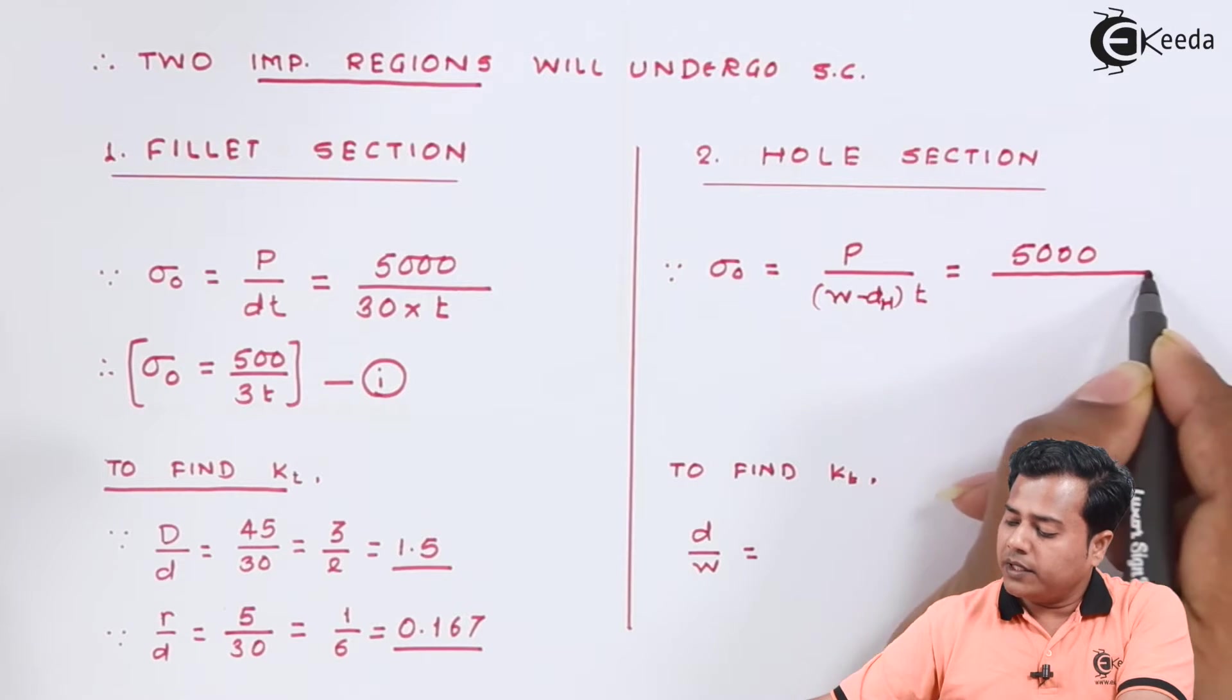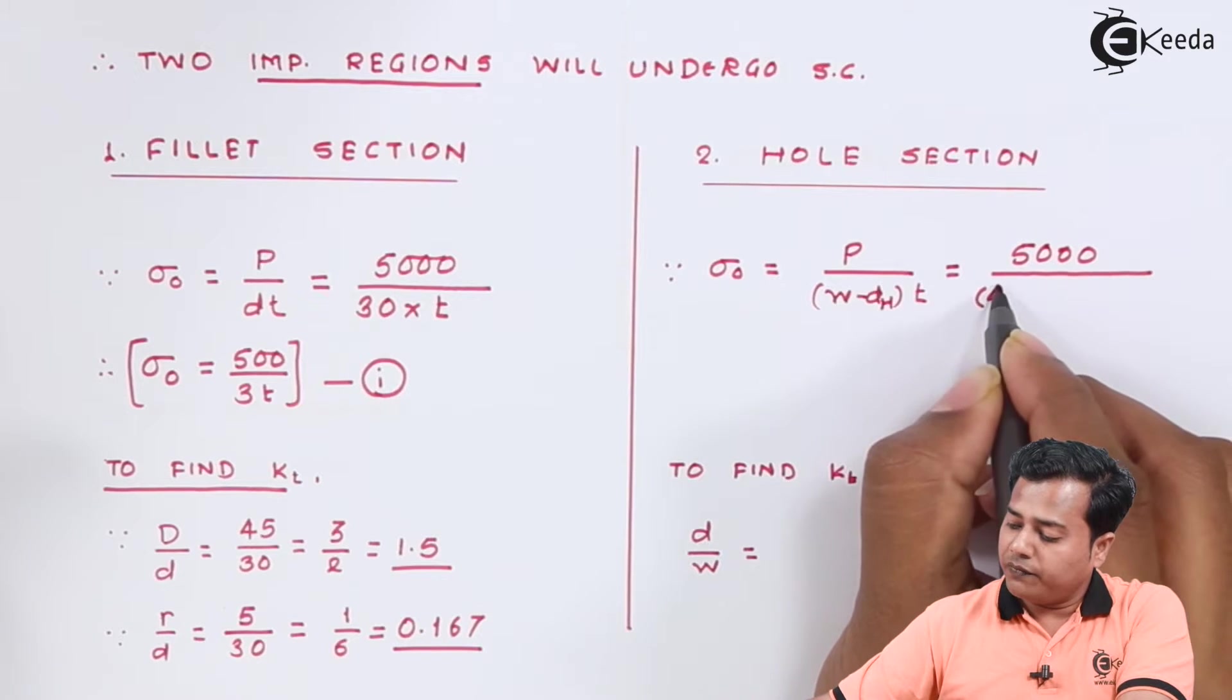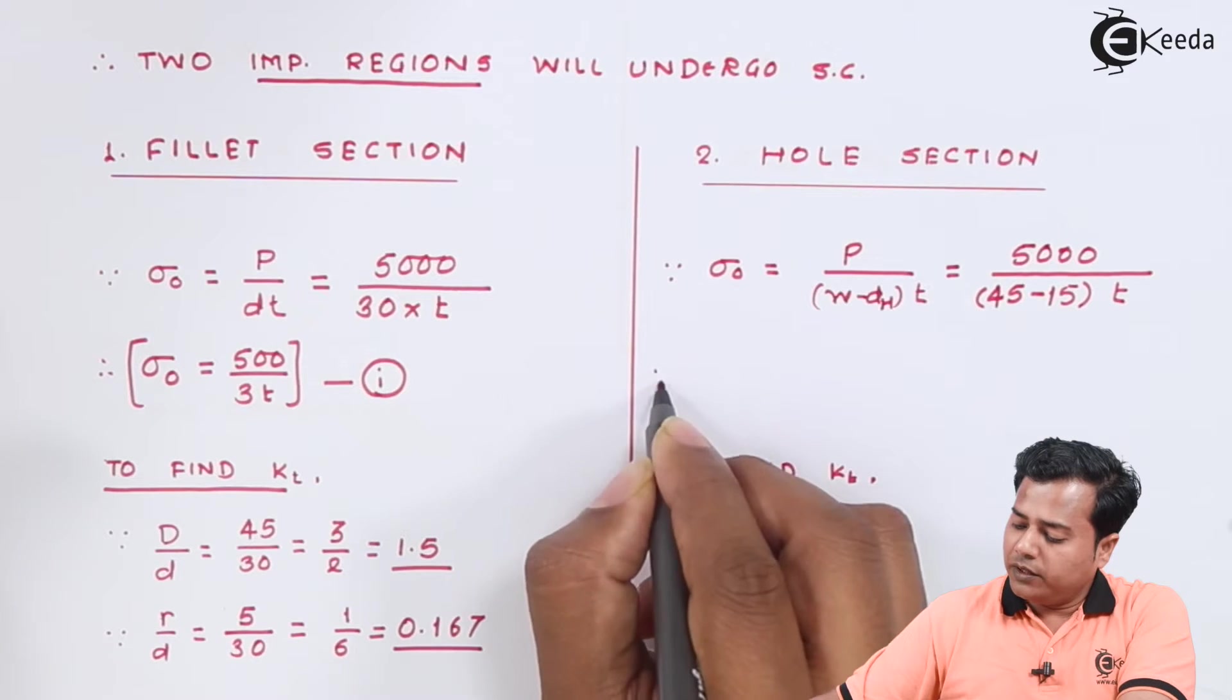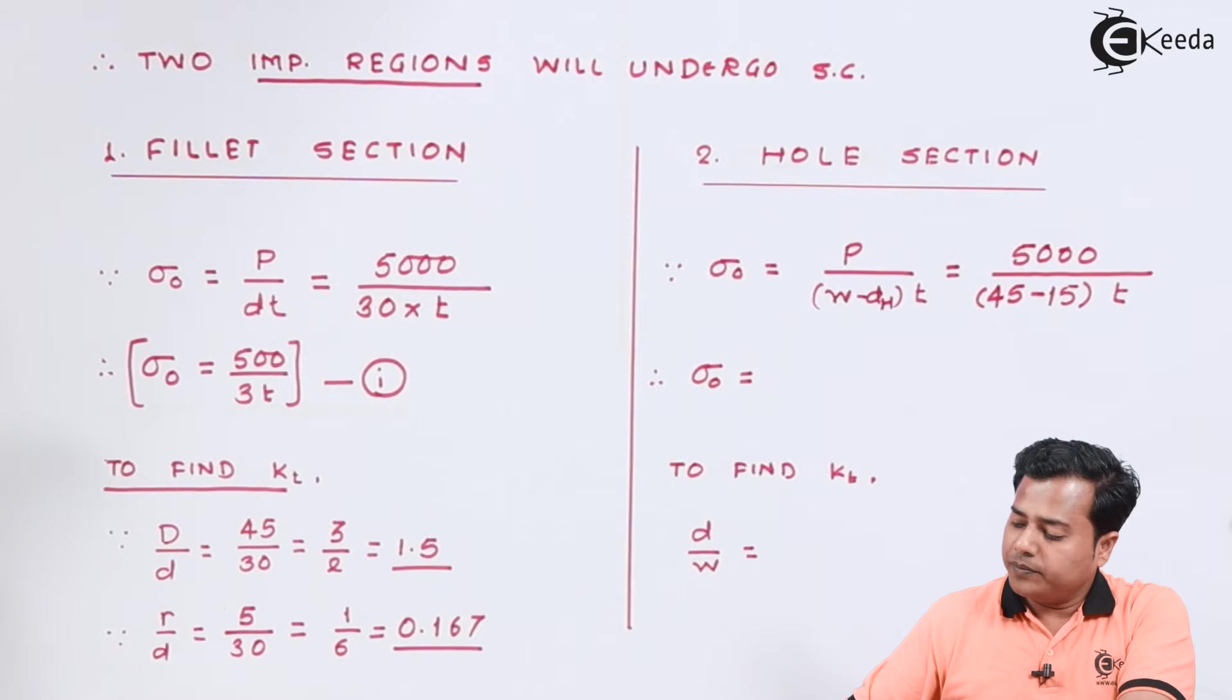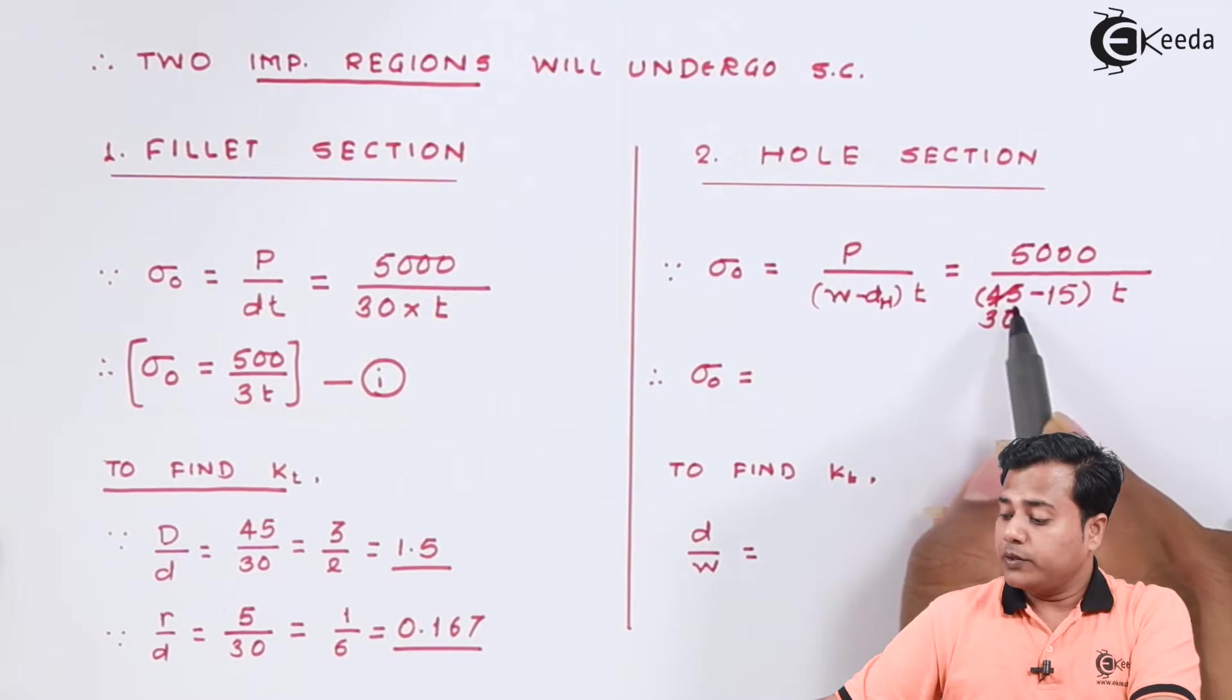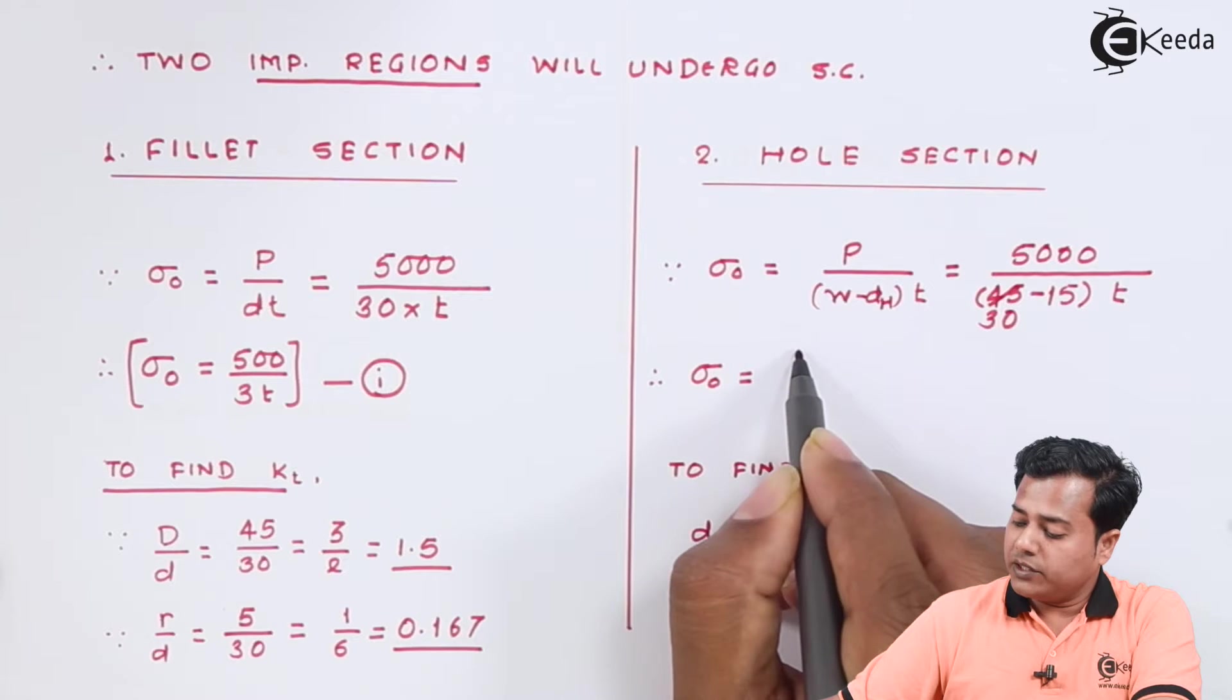15 into thickness and therefore nominal diameter in this case becomes where the value is actually 30 because that is the smallest value we have. This was the largest value, the actual value is 30 so in that case this ratio becomes 5000 divided by 30t, equation 2.